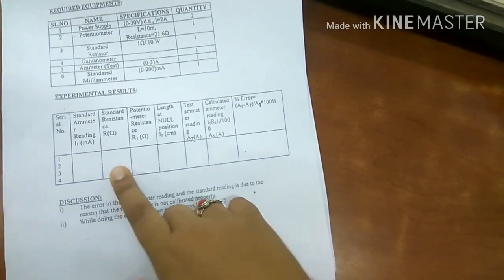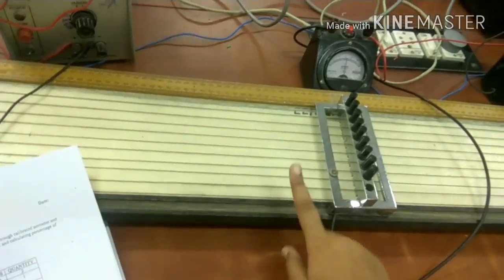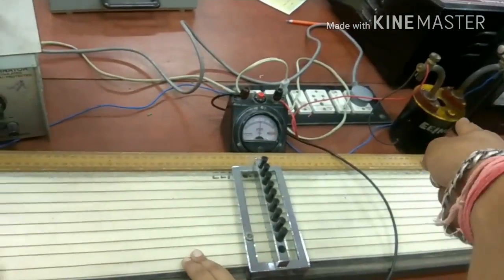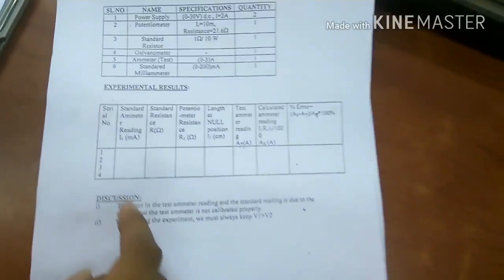Second is the standard resistance. This is our potentiometer resistance and the standard resistance is kept at the end. The brown color one, yeah this one. That is our standard.